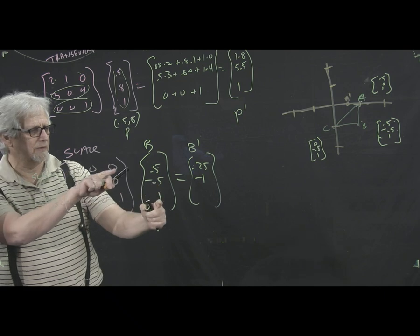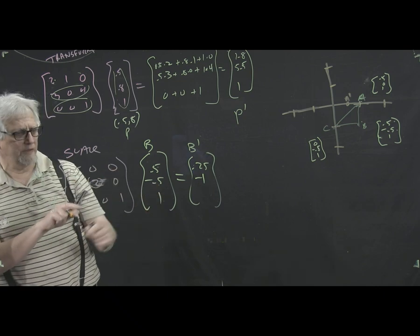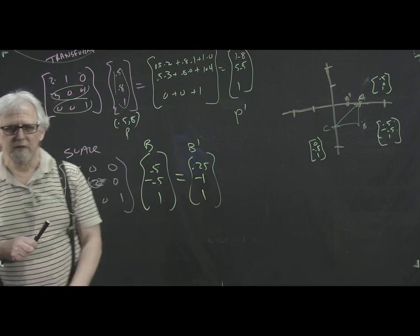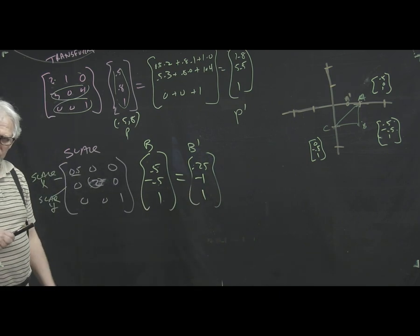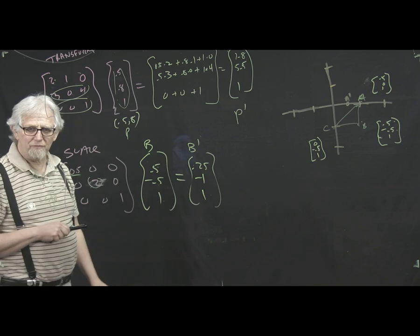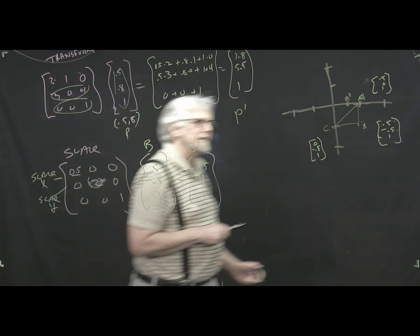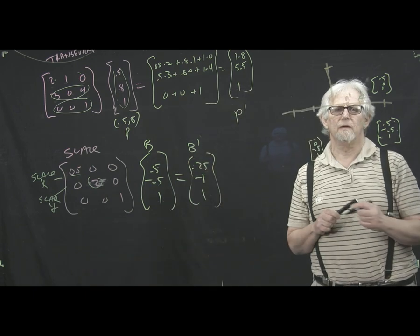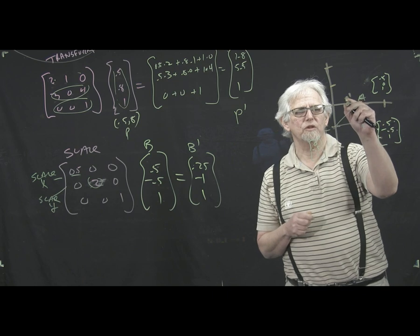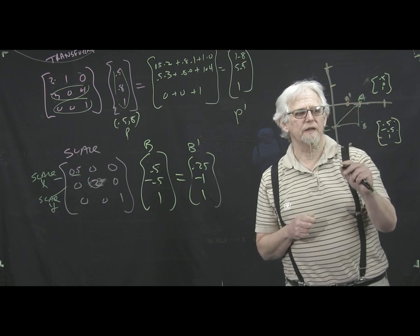So 0, minus 1, 0. And then 0, 0, 1 again. So, B prime is at 0.25, minus 1. B prime over here is at 0.25, minus 1.